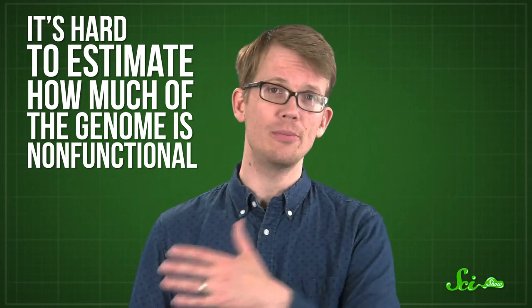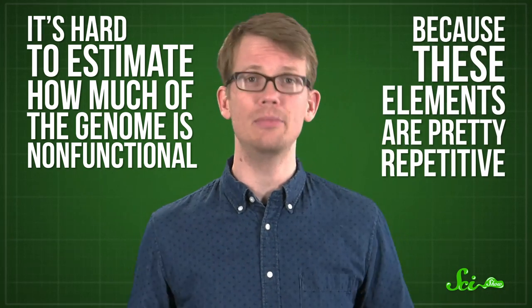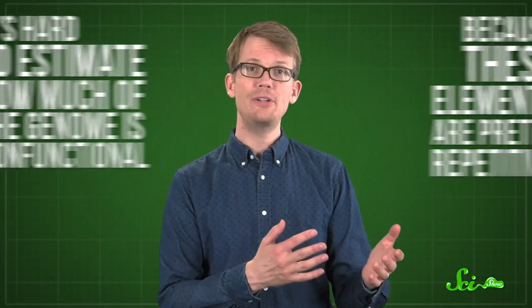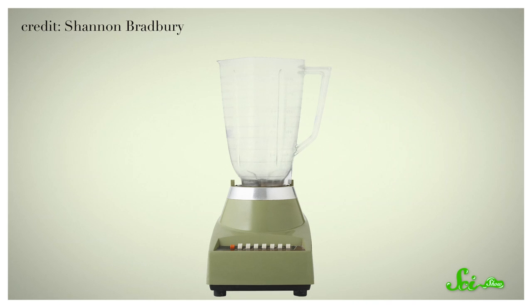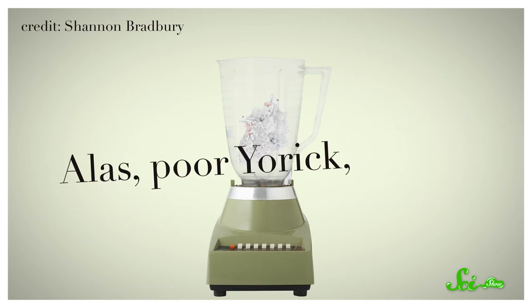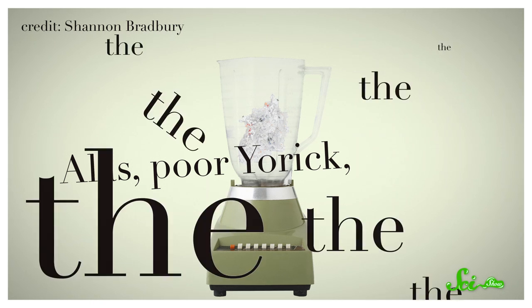It's hard to estimate how much of the genome is non-functional, because these elements are pretty repetitive. Repetition tends to throw off our sequencing methods, because those methods rely on looking at a bunch of copies of the genome at once. It's like throwing 600 copies of Hamlet into a blender. The unique parts, like, alas, poor Yorick, are fairly easy to spot. But how many times does Shakespeare use the word the? If you just get a the, you don't know where to put it.